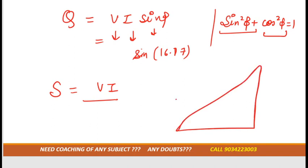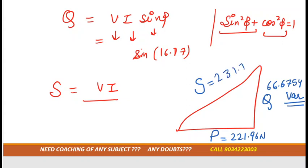Now we need to calculate power triangle. For the power triangle on the base side we'll take active power, this one is the reactive power, this one is the apparent power. Active power is 221.96 watt, reactive power is 66.657544 VAR. VAR is volt ampere reactive. Apparent power is 231.769 VA. VA is volt ampere and this angle is 16.71.